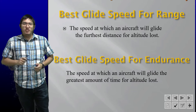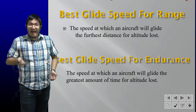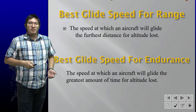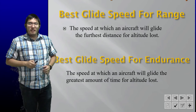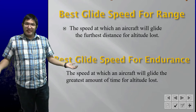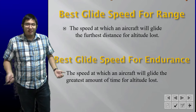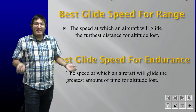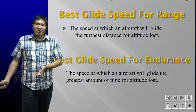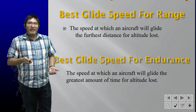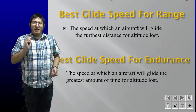Best glide speed for endurance, or minimum sink speed, is the speed at which the aircraft glides for the greatest amount of time with the least altitude loss. In the Schweizer 233 glider, best glide speed is 45 to 50 mph (solo vs. dual), while minimum sink speed is 38 to 42 mph. This is the speed to use for time building, since you'll stay airborne as long as possible.